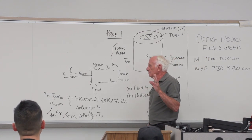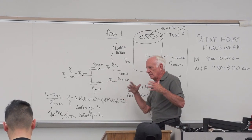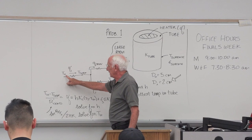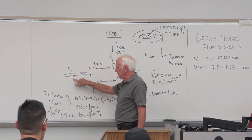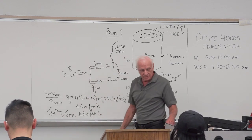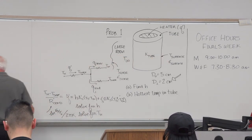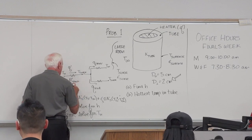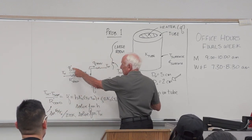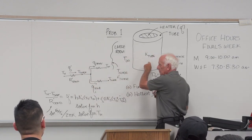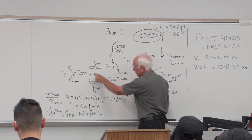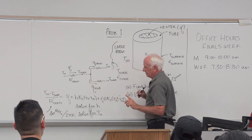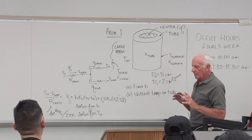If you want to, you can draw a circuit to help visualize the problem. This is the temperature of the tube at the heater — T_H for heater. There's a conduction resistance going to the outer surface temperature of the tube. Then it splits: some heat goes to the air in the room by convection, some goes to the room walls by radiation. That's the roadmap of what's going on.